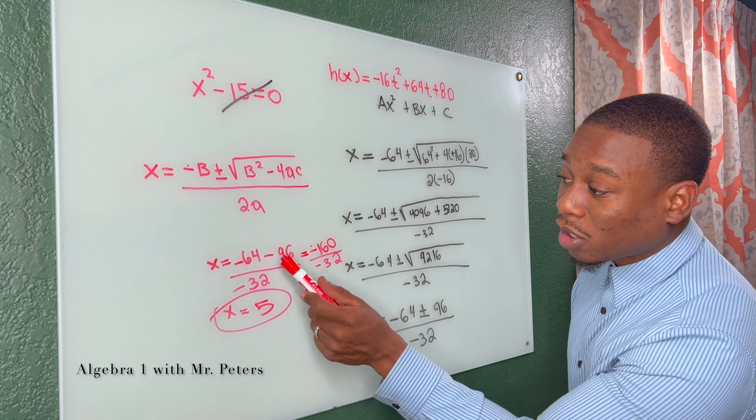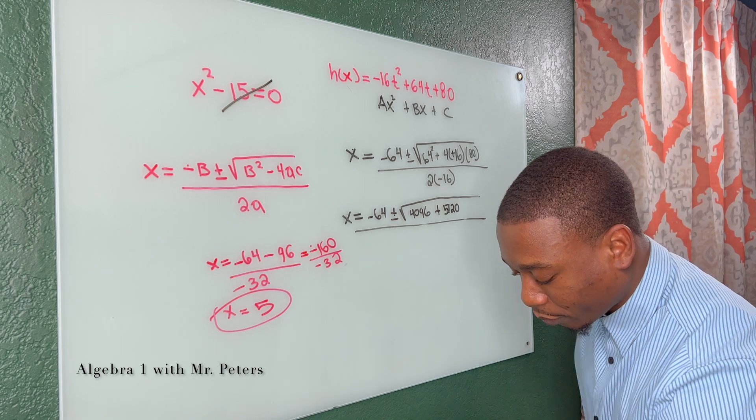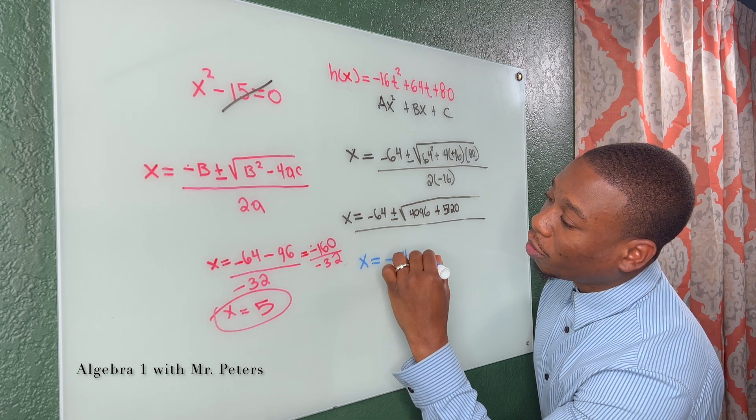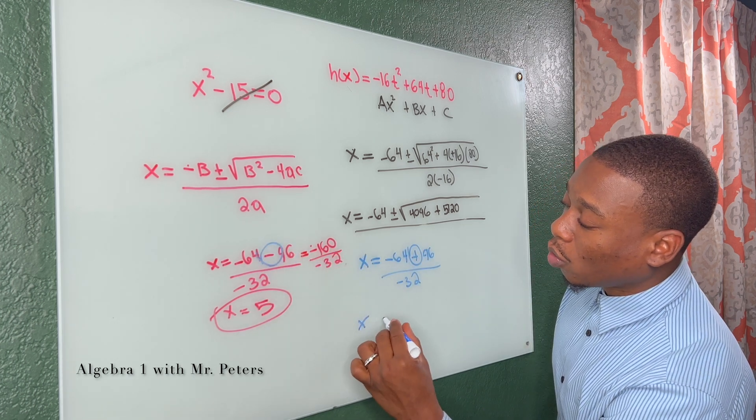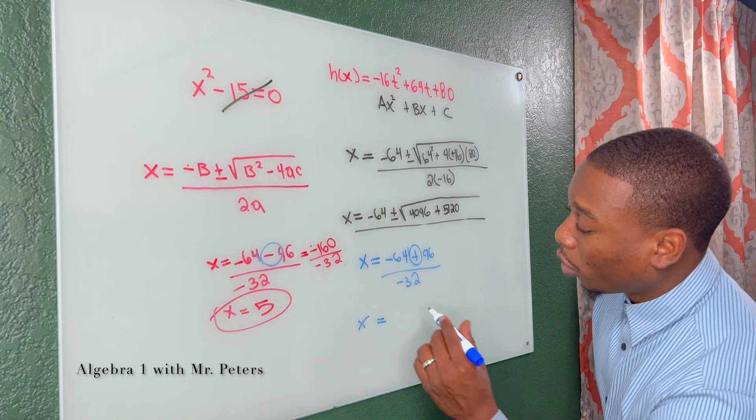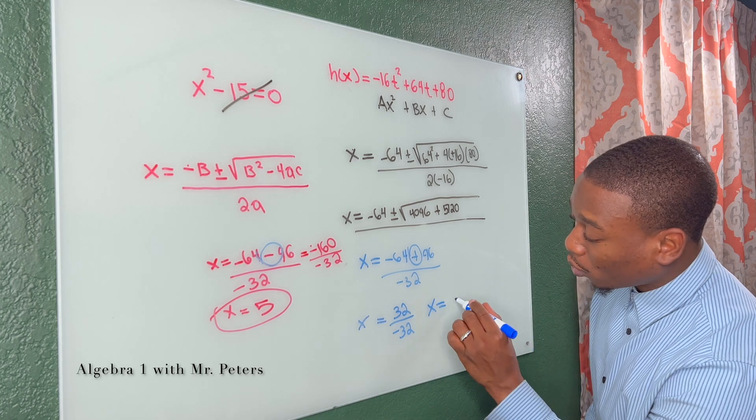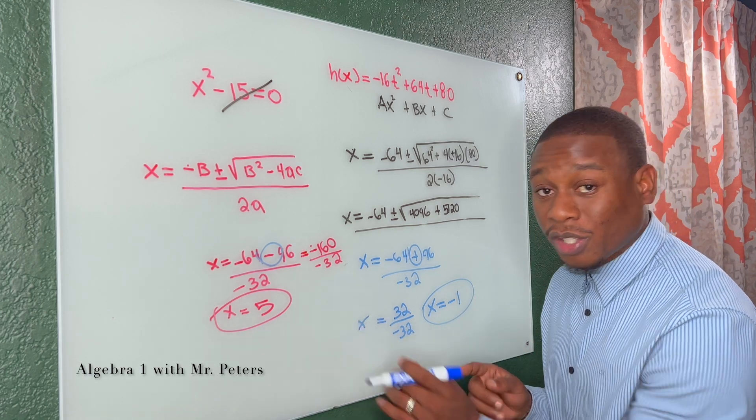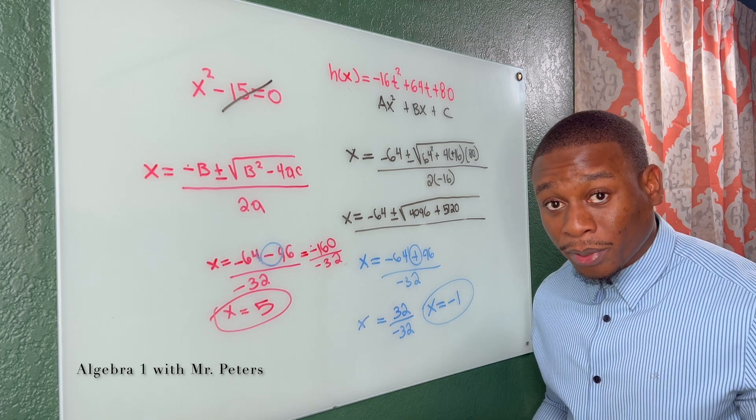Now we're going to go back and instead of subtracting, we're going to add 96. So negative 64 plus 96 all over negative 32. Only thing that changes are the signs. So we have negative 64 plus 96, we're going to get positive 32 over negative 32. So we know our second x is equal to negative one. Now, the reason why a lot of students get these equations wrong is because they try to do both of these equations in one step. Just separate it and make sure you do each and every step.